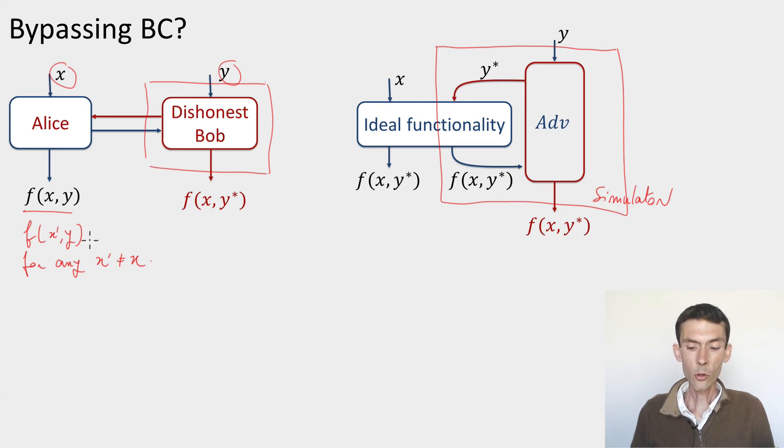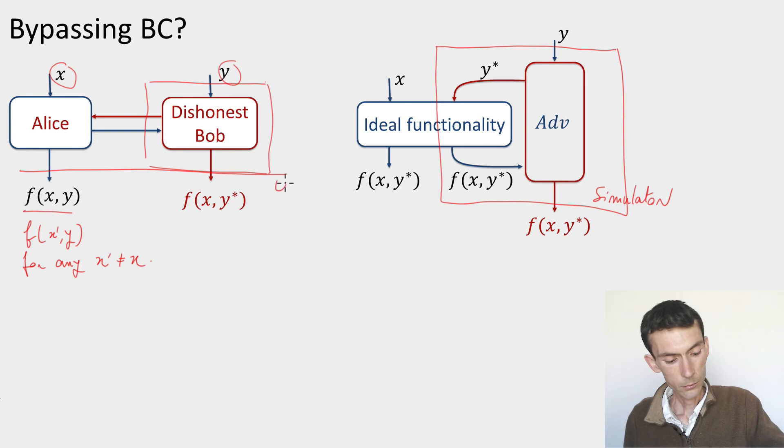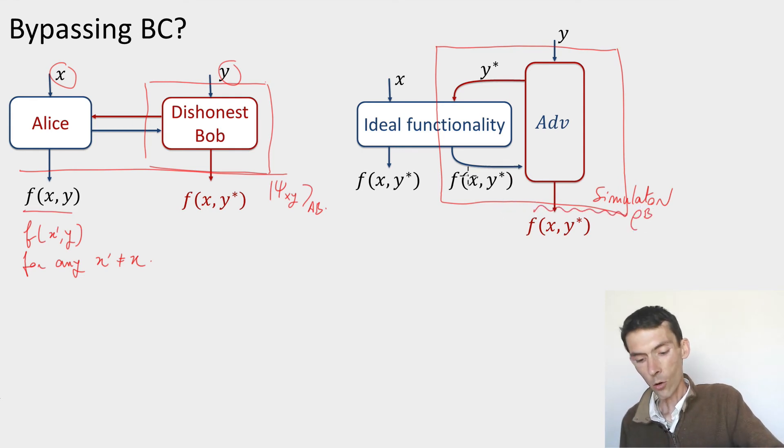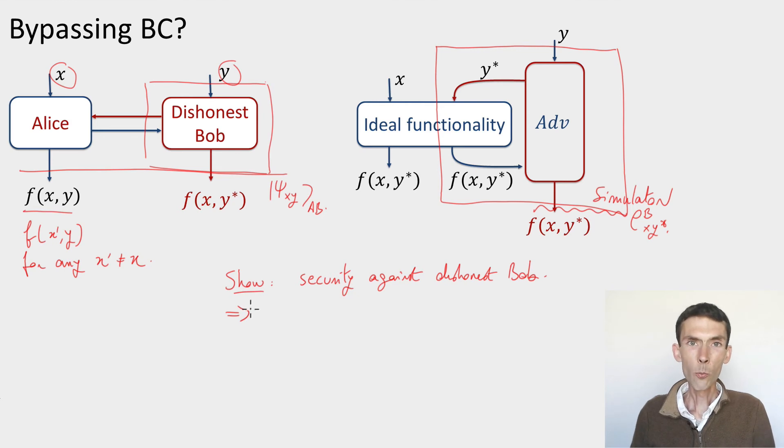Unfortunately, if we require our protocol to be secure in this simulation paradigm against dishonest Bobs, then this is what is going to happen. There's a big downside for multi-party computation, but it is the case. Let me just give you the idea of why. So it's similar to bit commitment. We can look at the state of the protocol here, psi_xy on Alice and Bob. And look in this simulation paradigm at Bob's reduced densities for b depending on x and y star.